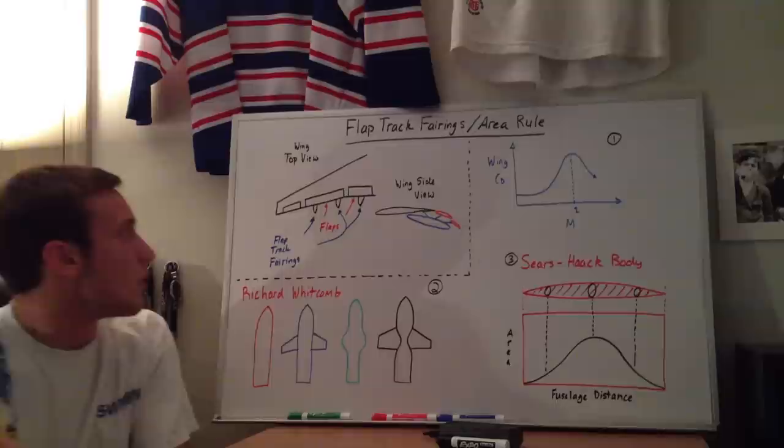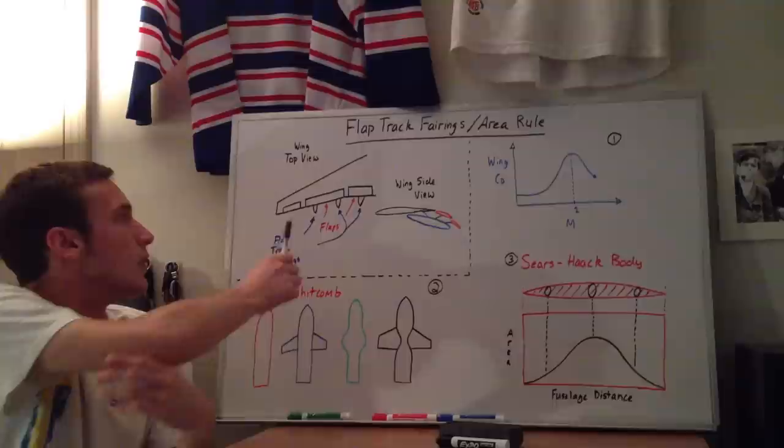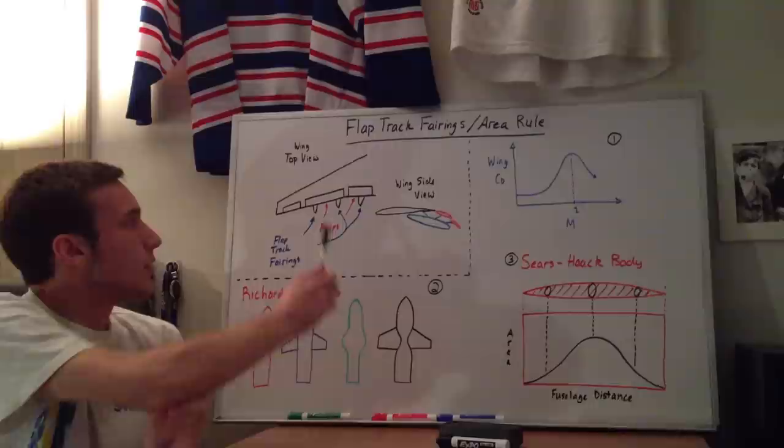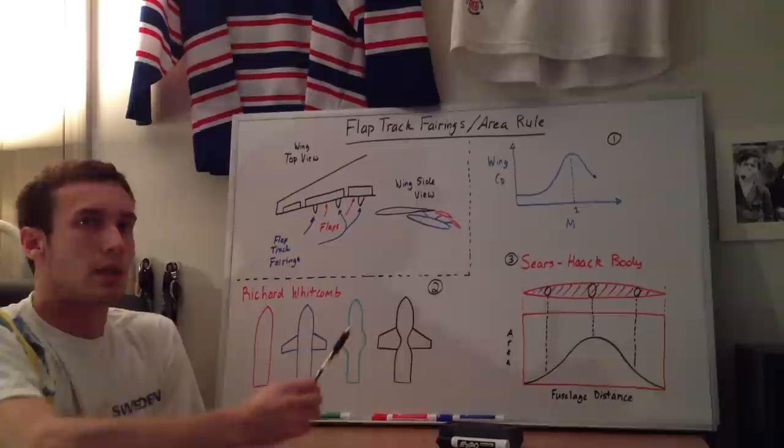So on this wing, in the top view of the wing, this is the aileron out here, and you can see the flaps here and here, and then the flap track fairings are these things. This is the top view, so you only see the edges or the ends of them sticking out. On the bottom they continue up into here.